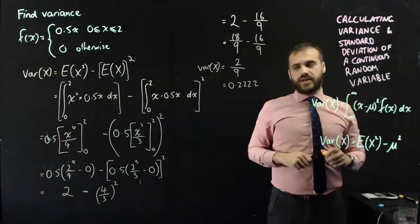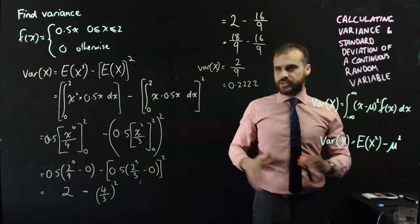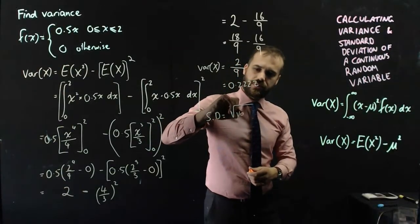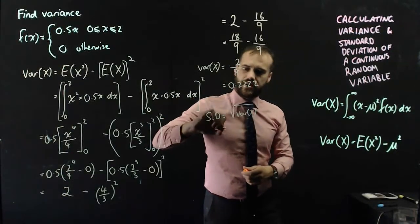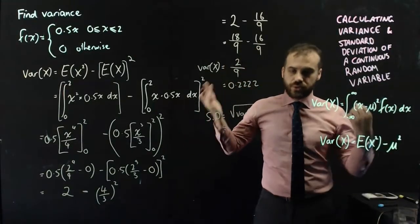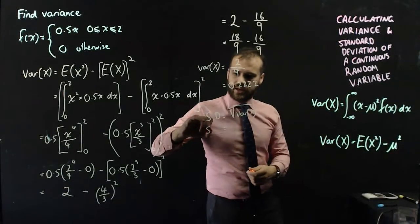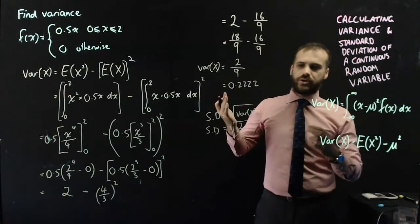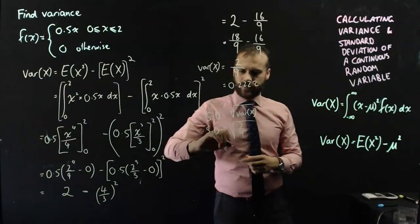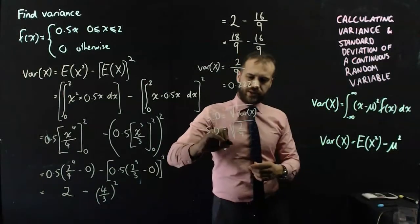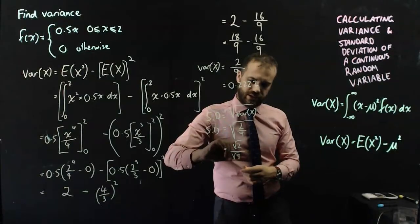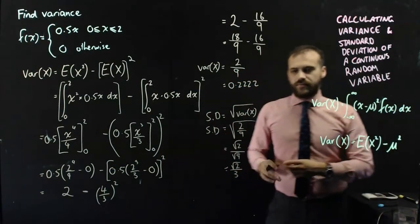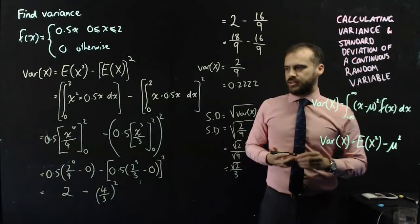Now, what about the standard deviation? I hear you ask. Well, that's really, really simple, because standard deviation is equal to the square root of variance. And, in this case, the variance is 2 over 9. So, the standard deviation is equal to the square root of 2 over 9. And, we can simplify that, if you know a little bit about simplifying these things. The root 2 over 3. That is our standard deviation.